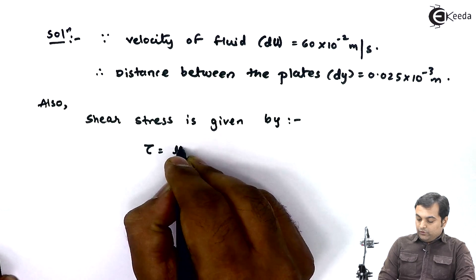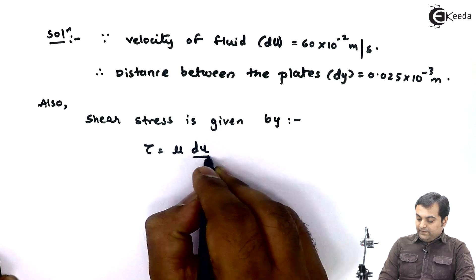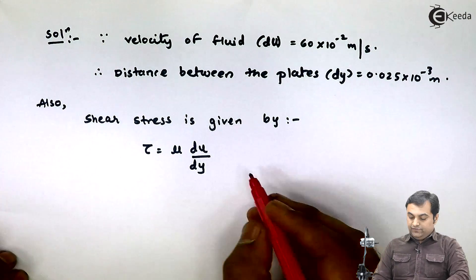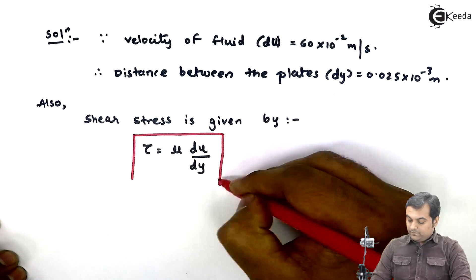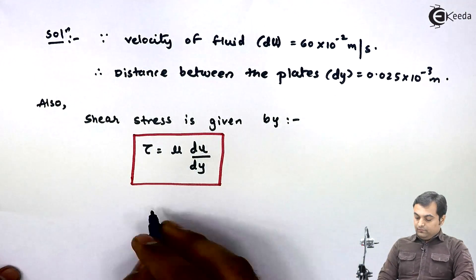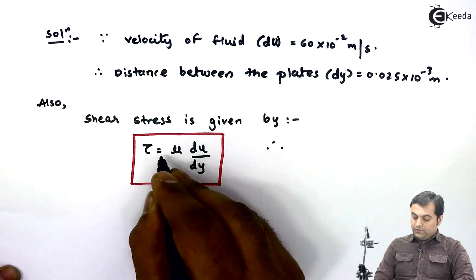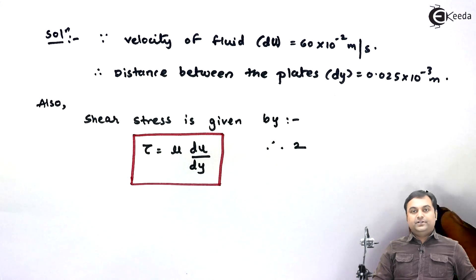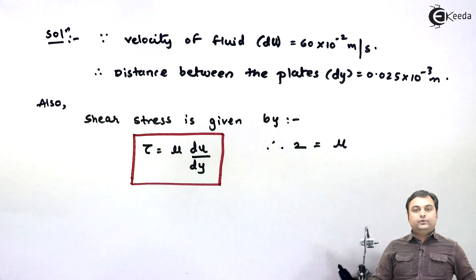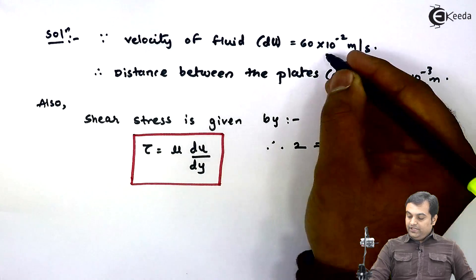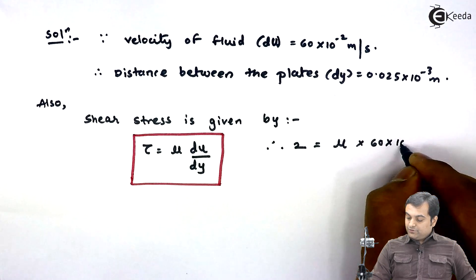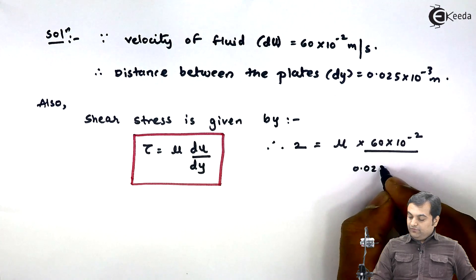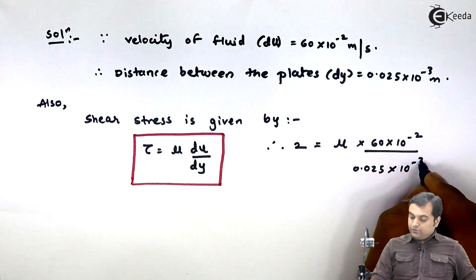From Newton's law of viscosity, shear stress tau is equal to mu into du by dy. This is the relation for shear stress. Substituting the values: tau is 2 Newton per meter square, mu is what we have to calculate, du is 60 into 10 raise to minus 2, and dy is 0.025 into 10 raise to minus 3.